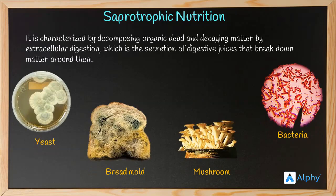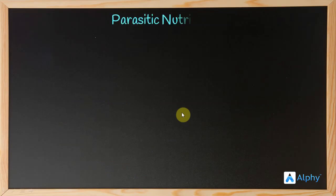Examples of saprotrophic organisms include yeast, bread mold, mushroom, and bacteria. These organisms feed on dead and decaying material and are also responsible for the rotting of food materials, as seen in the case of bread mold.